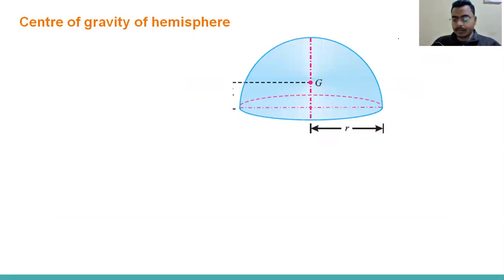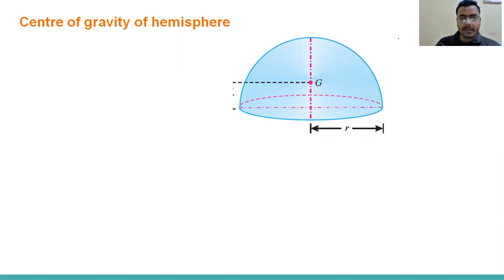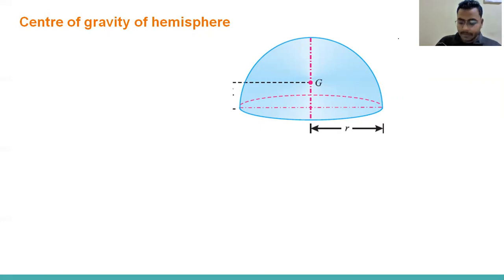So in this case you can see this is the hemisphere. First we have to write the formula — in the case of solid figures, how we can calculate the center of gravity for the solid body. When we are calculating the center of gravity for the plane area, we use the integration of y-dash dA divided by integration of dA. But in the case of a solid body, we write y-bar equals integration of y-dash dV.